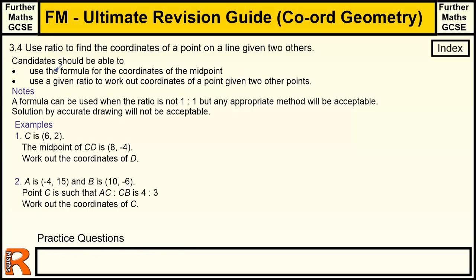So things we need to know. We need to know how to use the formula for the coordinates of midpoints. Essentially, all you've got to do there is to add the two coordinates. So add the two x-coordinates and divide by 2, and that will give you the midpoint. And the same for the y-coordinates. I mean, you call that a formula, but it's fairly obvious that's what you've got to do.